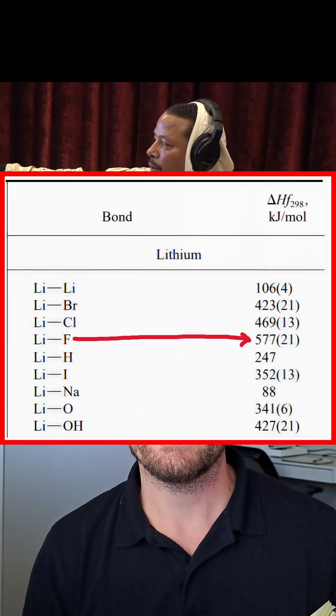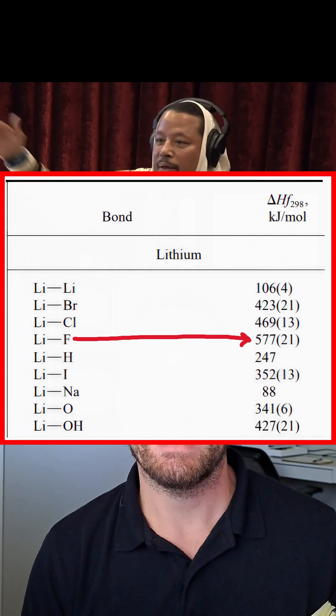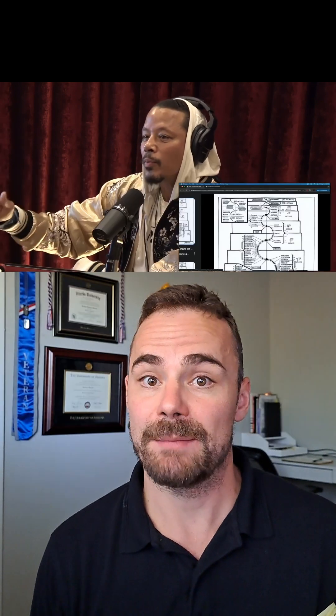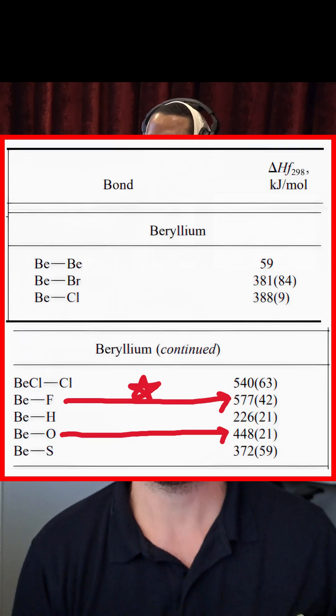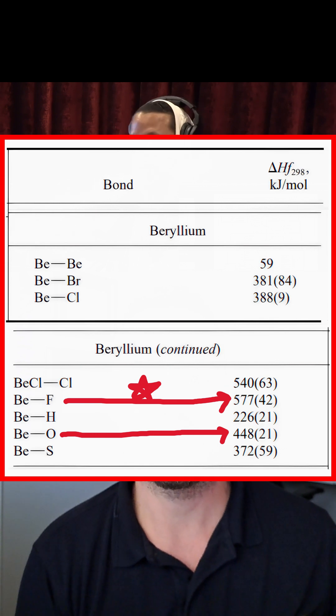So, looking at the BDEs of lithium, we see that indeed lithium to fluorine has the highest bond dissociation energy. Looking at beryllium, though, we see that beryllium to oxygen does not have the highest BDE. Instead, it's to fluorine.